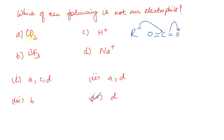BF3 — everyone knows that BF3 has a vacant orbital, so BF3 acts as an electrophile. H+ — everyone knows H+ is also an electrophile. Na+: many people have a misconception that electropositive elements with a positive charge are electrophiles. A positive charge means they are electron-loving — they are electrophile. A negative charge means nucleophile. That misconception is wrong. So the answer is D — Na+ is not an electrophile; the rest of the three are electrophiles.